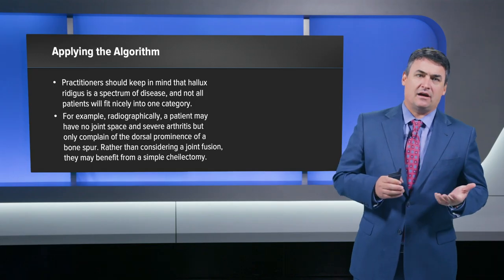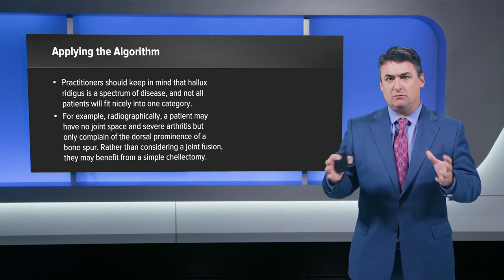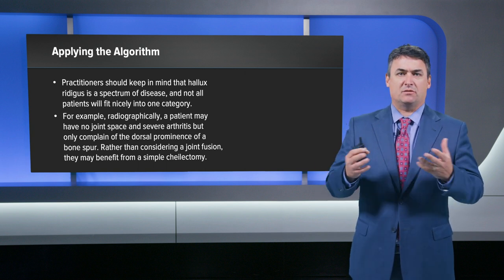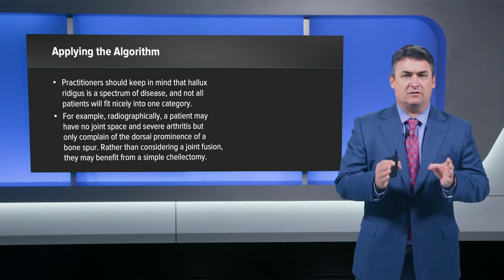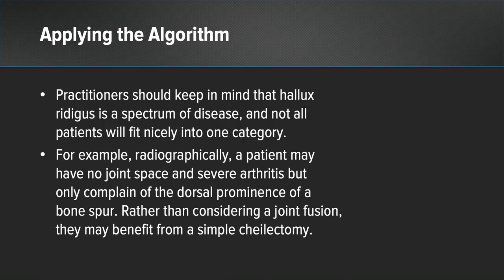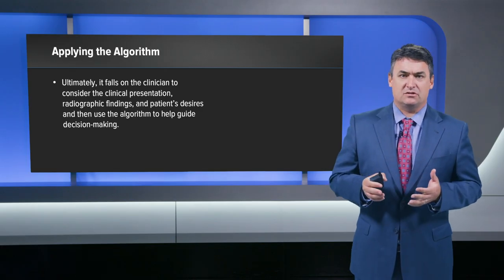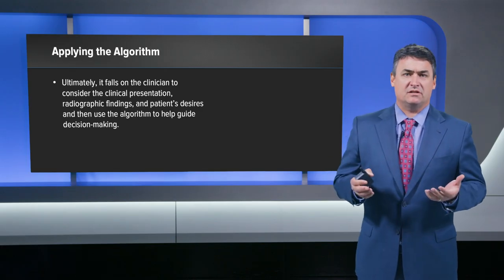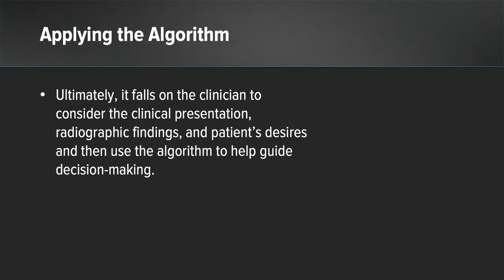When applying this algorithm, keep in mind it's a continuum of disease — a spectrum of pathology and not all patients fit neatly into a category. For example, a patient might have radiographically severe joint space narrowing and a large dorsal osteophyte but only complain about the osteophyte, making a simple chylectomy the best option rather than joint fusion. Ultimately, it falls on us as clinicians to consider the clinical presentation, radiographic findings, and patient's desires when applying the algorithm to guide decision making.